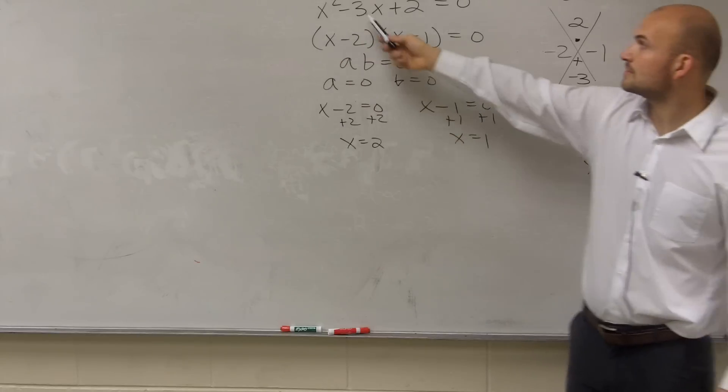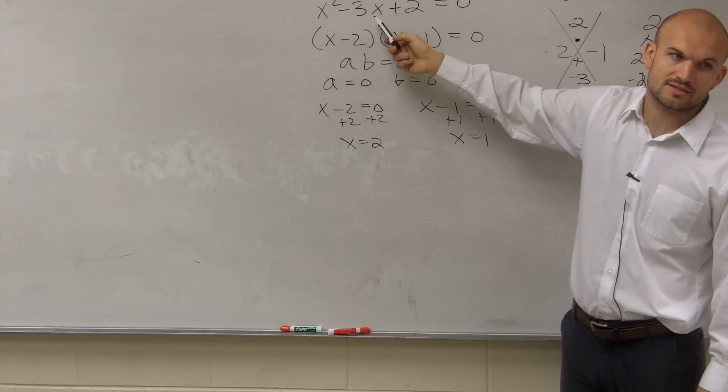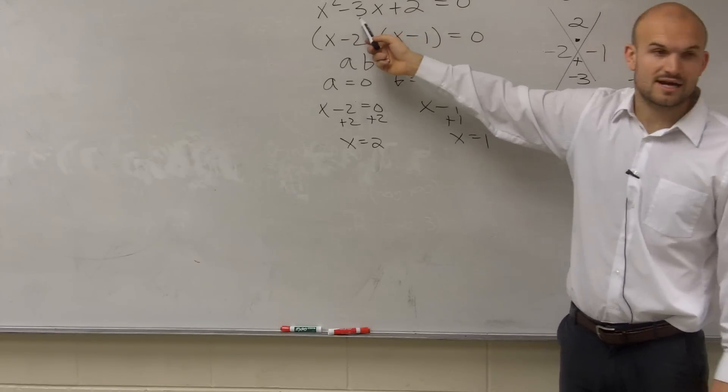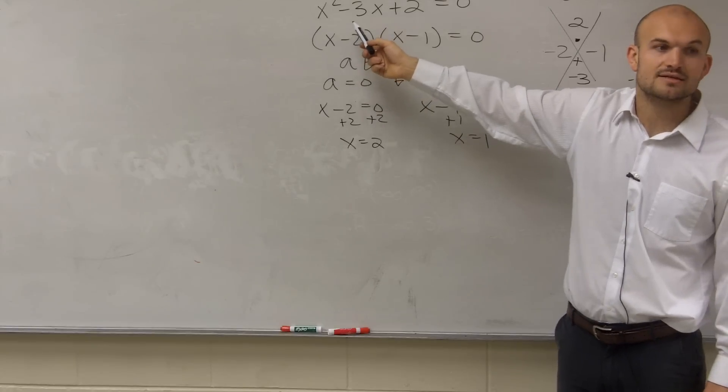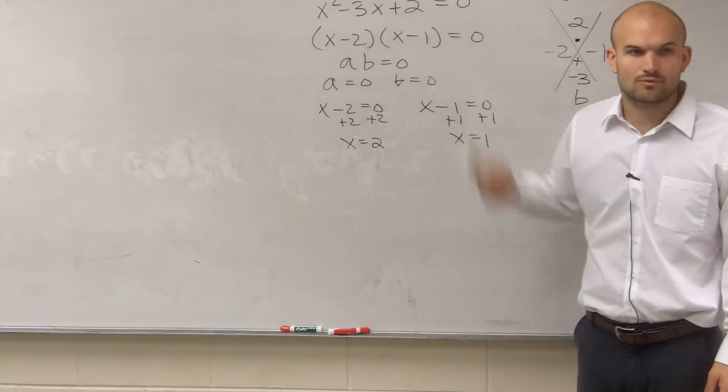Now let's do 2. 2 squared is 4. Negative 3 times 2 is negative 6. 4 minus 6 is negative 2. Negative 2 plus 2 is 0. See how it works for both of them?